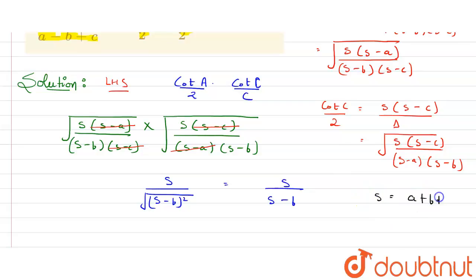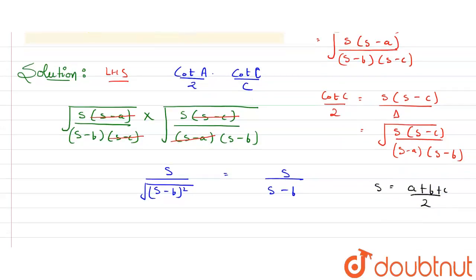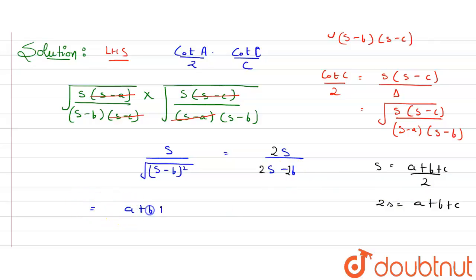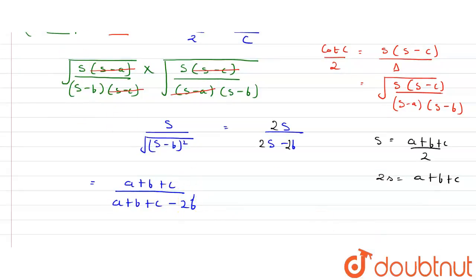We know that s is the semi-perimeter, so s = (a + b + c) / 2, which means 2s = a + b + c. To avoid multiple denominators, we multiply through by 2. So the numerator becomes 2s = a + b + c, and the denominator becomes 2(s - b) = a + b + c - 2b.